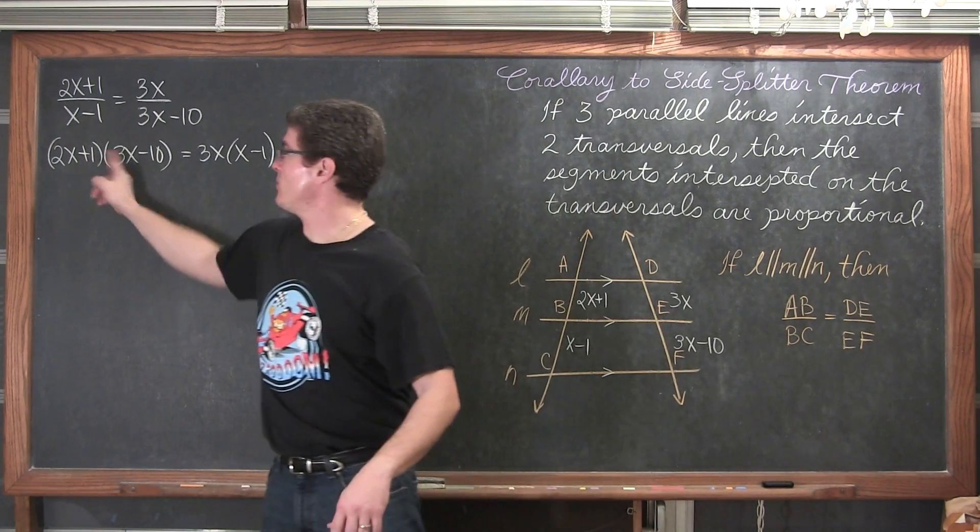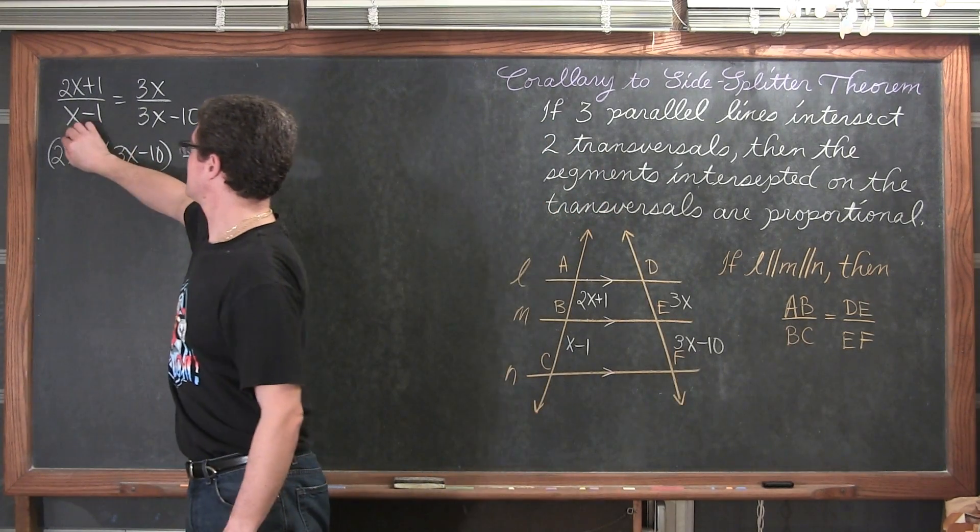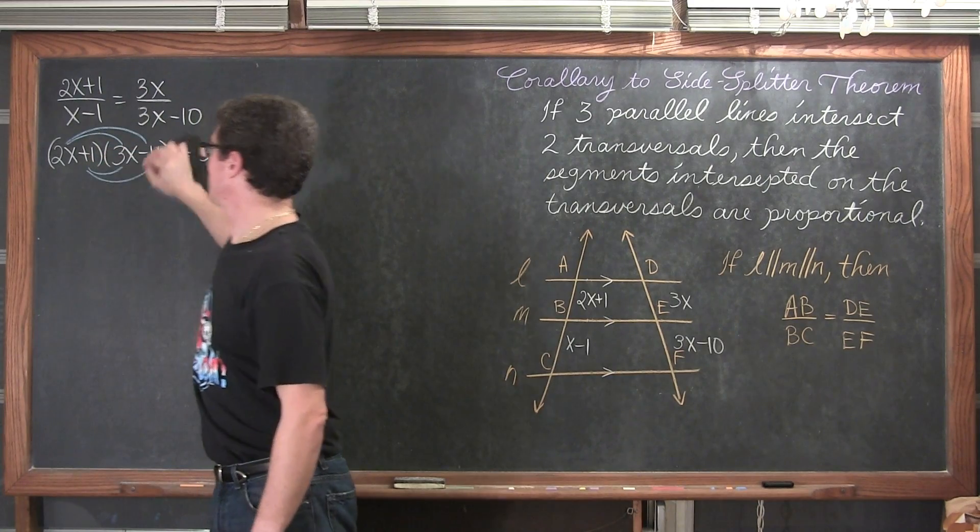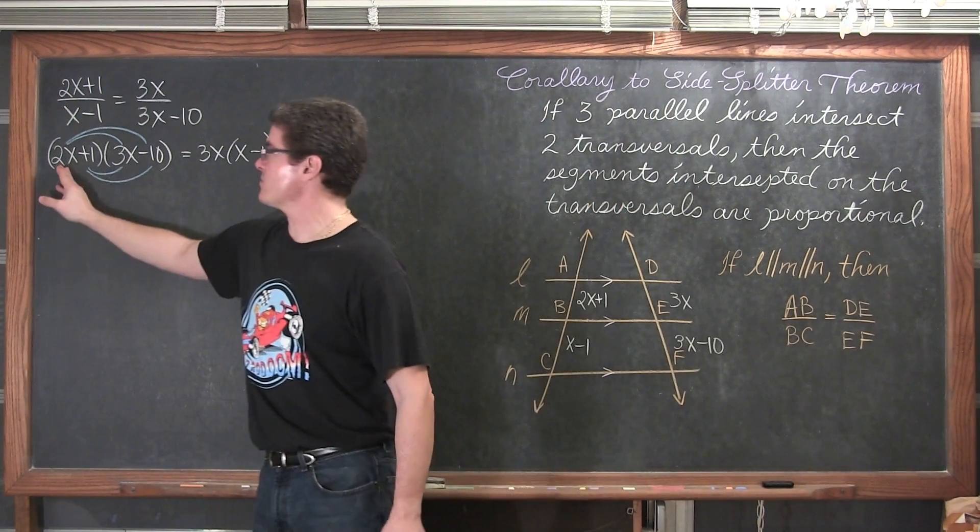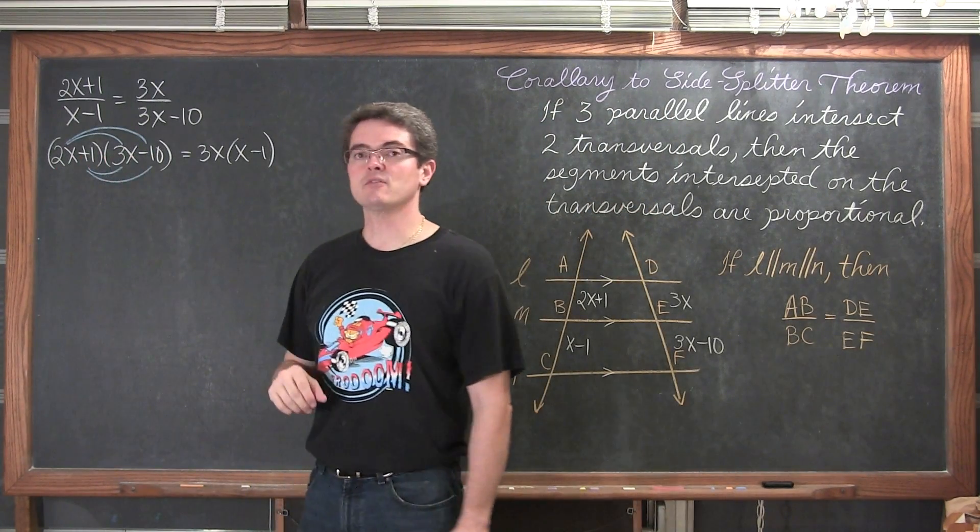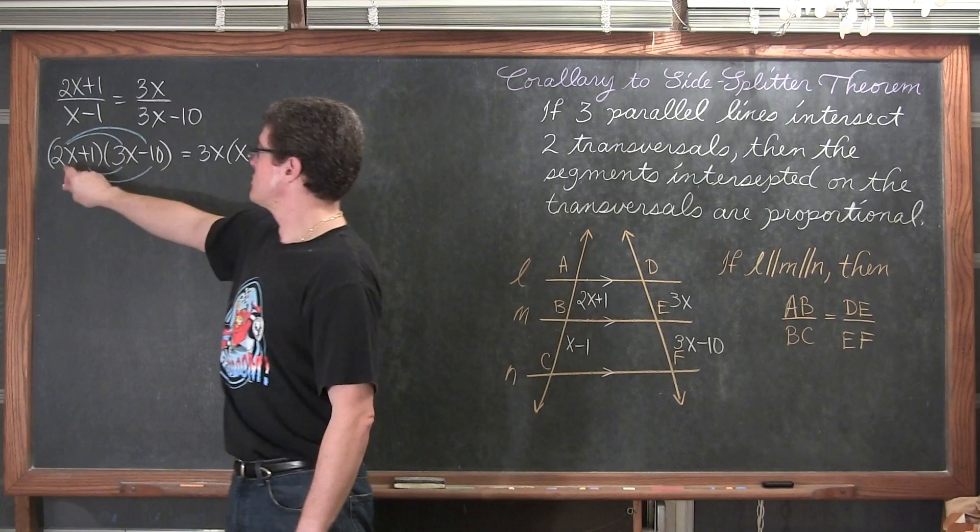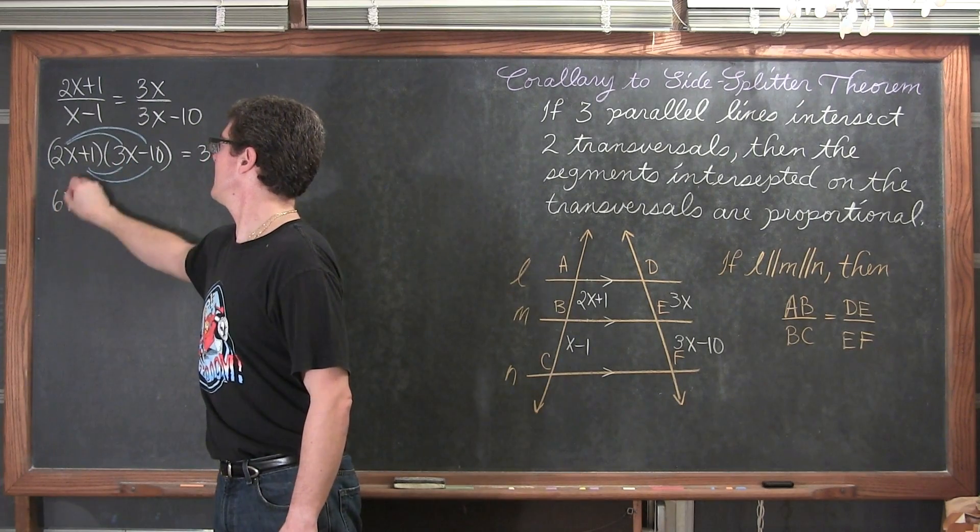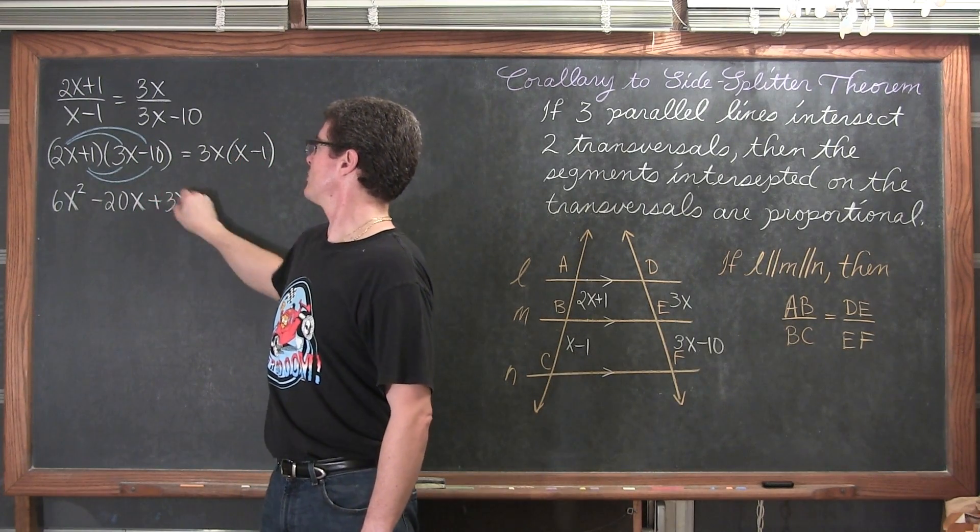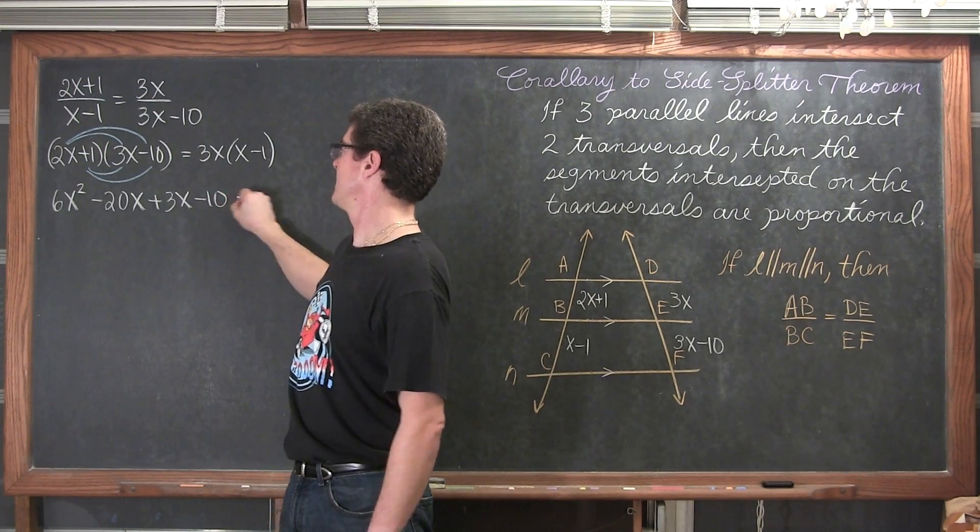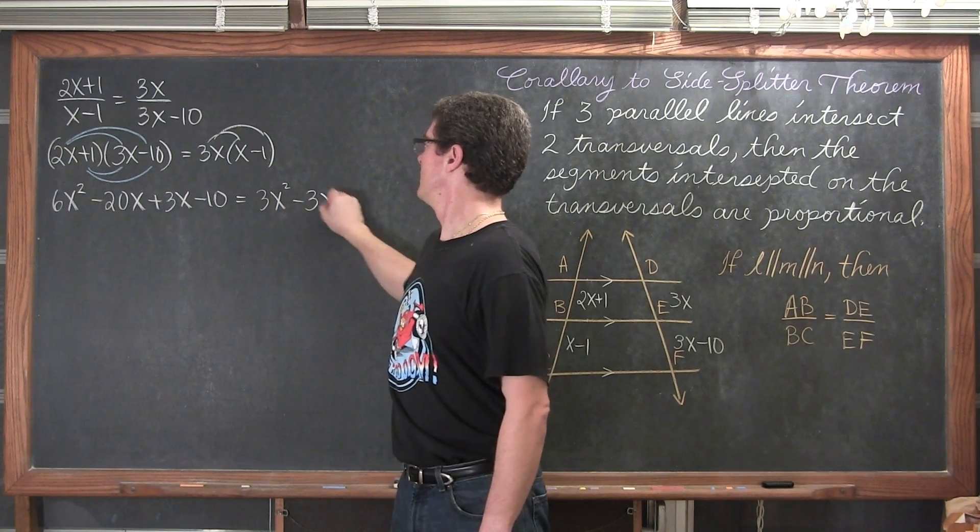We are going to go ahead and cross multiply this. And that means that we are going to have 2x plus 1 times 3x minus 10 is equal to 3x times x minus 1. Lots of algebra here to do. I have two binomials on the left hand side. We want to distribute those together. I hate the idea of the FOIL concept. So, I am going to just say that we need to distribute these binomials together. Just make sure that every term in the first factor gets multiplied to every term in the second factor.